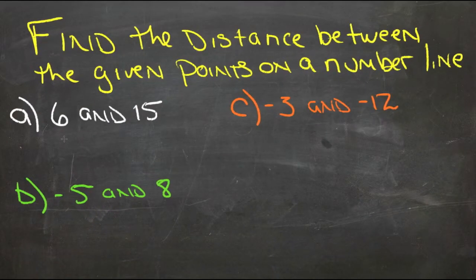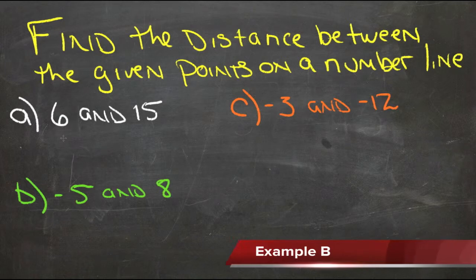To find the distance between two given points on a number line, all we need to do is find the absolute value of the difference between those numbers. Recall that difference indicates subtraction.